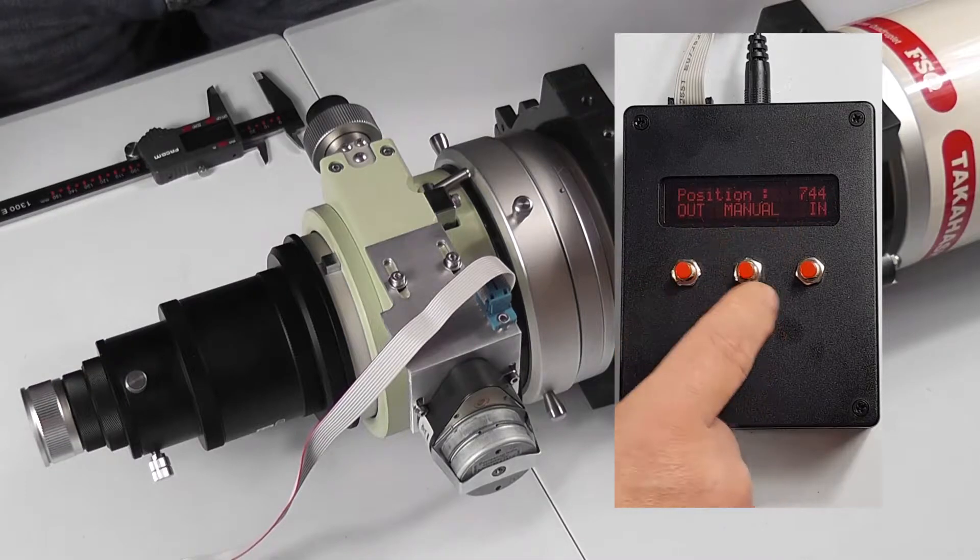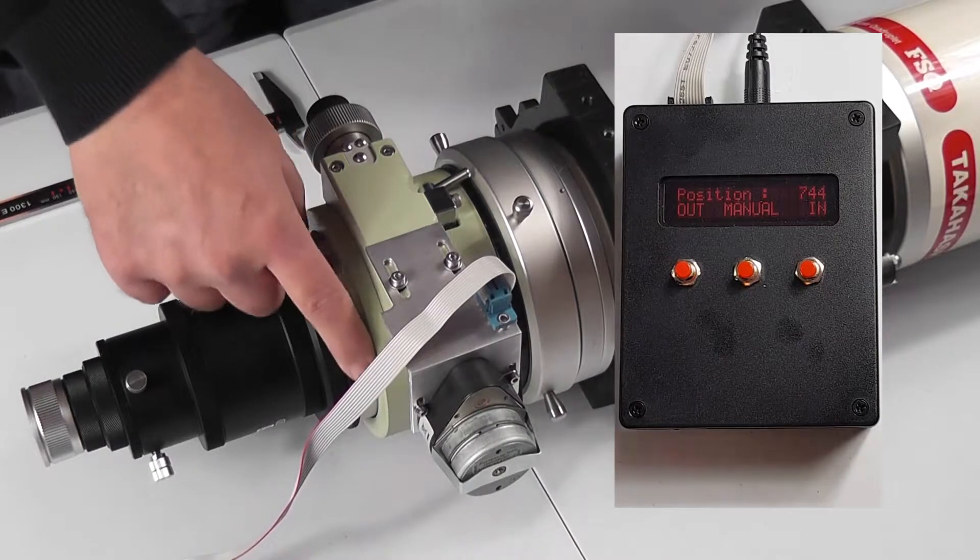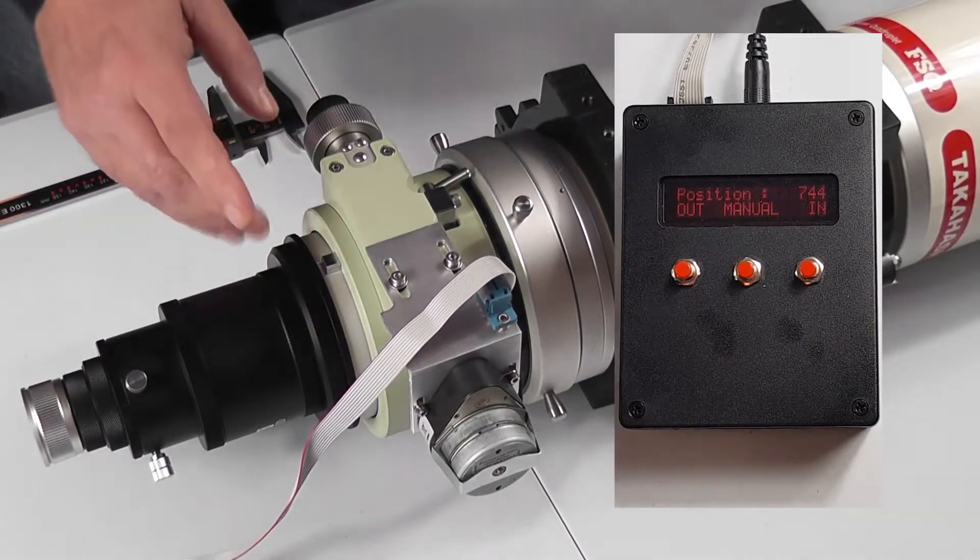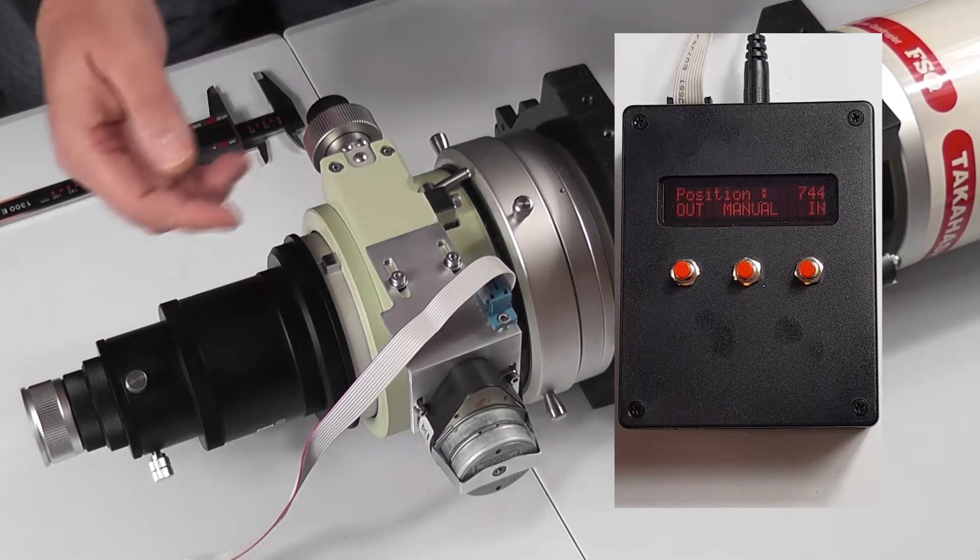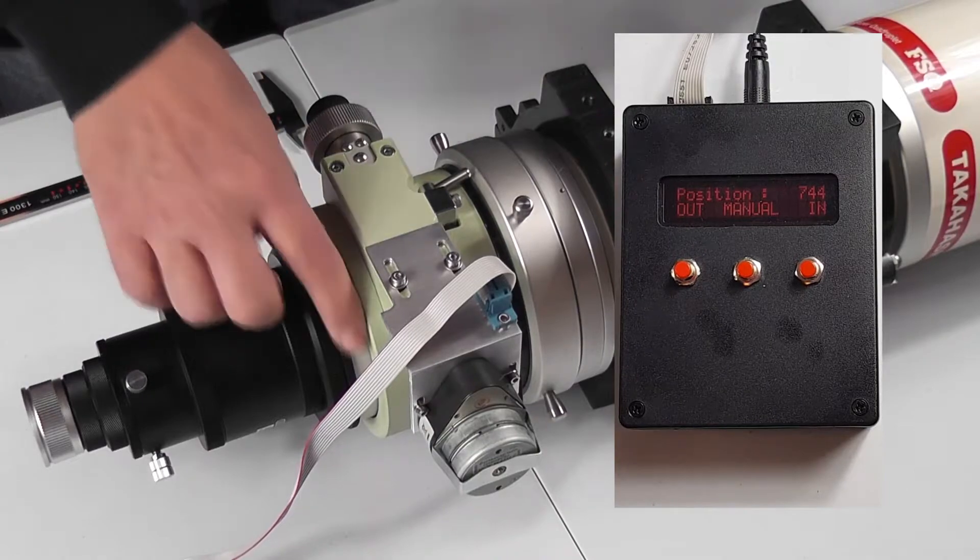So if we just run the focuser out—and when you start it's ideal to start with the focuser just out a bit, in case the direction's wrong. If it's hard up against the stop and the direction's backwards, you push out and it goes in, you could damage your focuser.